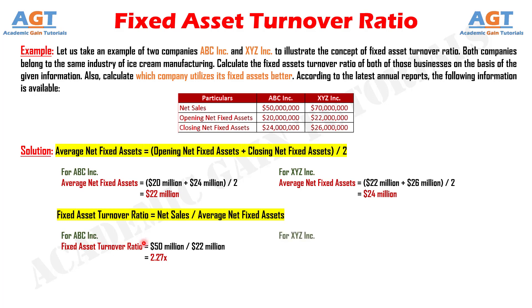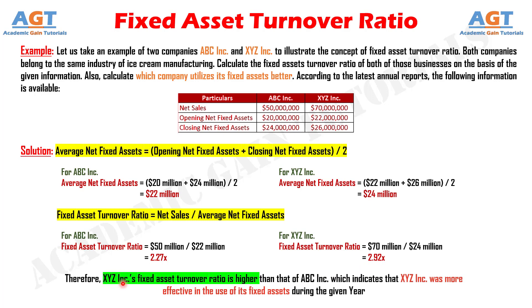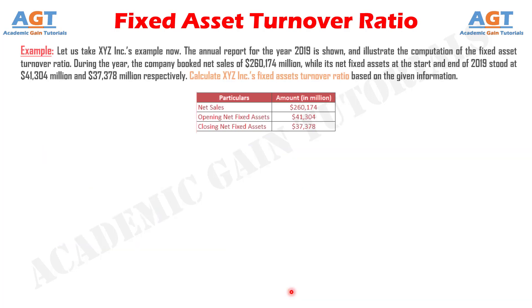For company XYZ, fixed asset turnover ratio equals net sales of $20 million divided by average net fixed assets of $24 million, which gives a fixed asset turnover ratio of 2.92. Therefore, the fixed asset turnover ratio of company XYZ is higher than that of company ABC, which indicates that company XYZ was more effective in the use of its fixed assets during that given year.